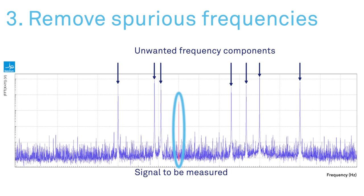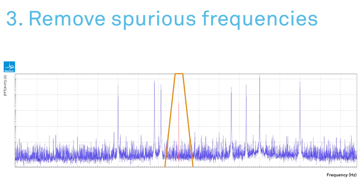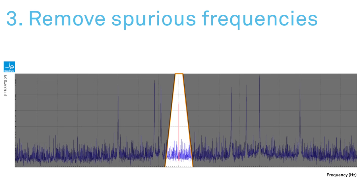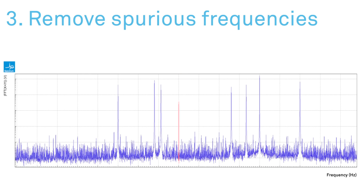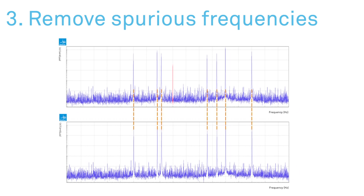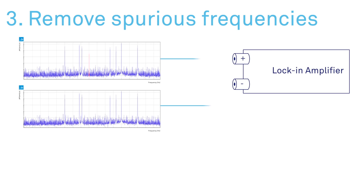One way to do this is to employ an appropriate external bandpass filter centered on the signal of interest and suppress the parasitic components. An alternative approach is to generate a signal identical in frequency and amplitude to the spurious component and feed it into the differential input of the lock-in amplifier.